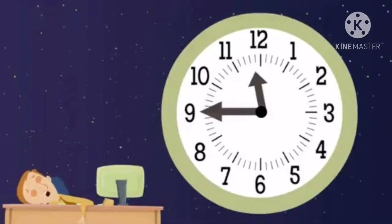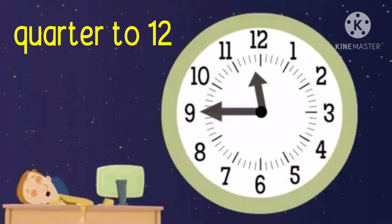Okay, children, what time is this clock showing? Great job, children. It is a quarter to twelve. A quarter to twelve is the same as eleven forty-five, because it means there is a quarter of an hour left until twelve o'clock.